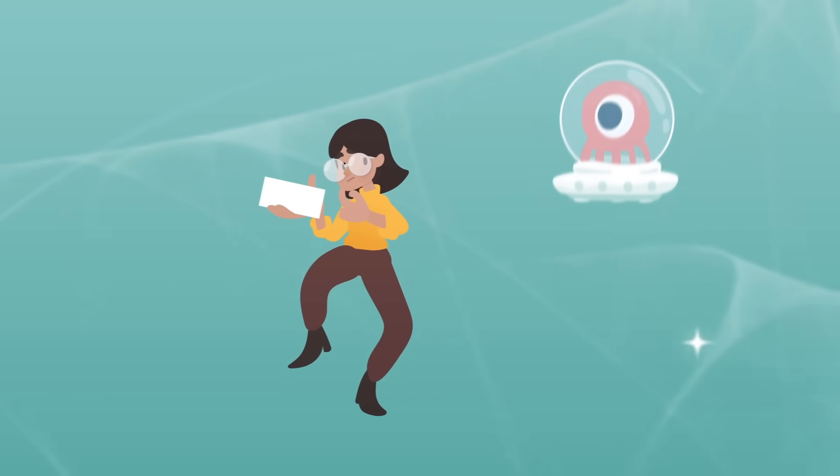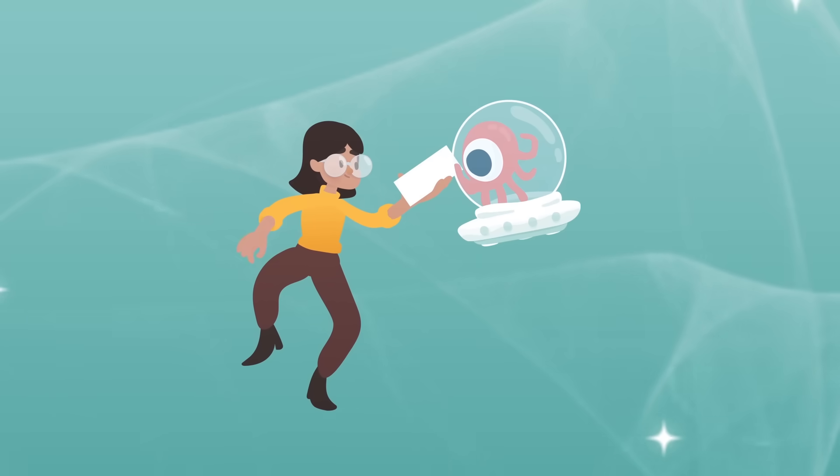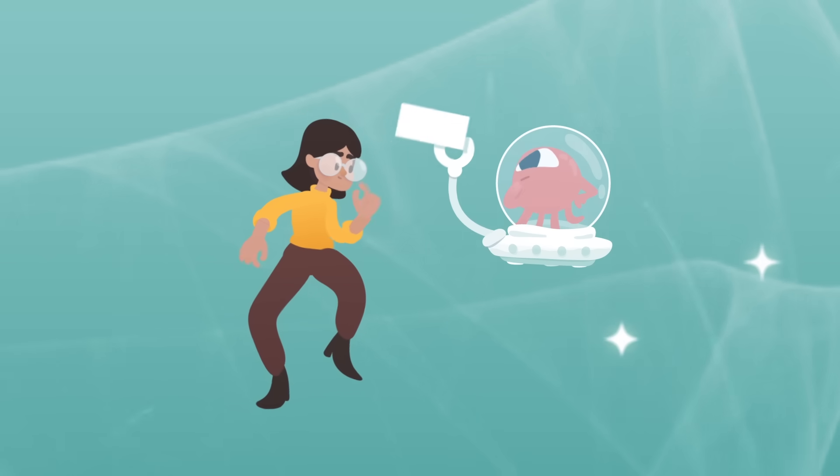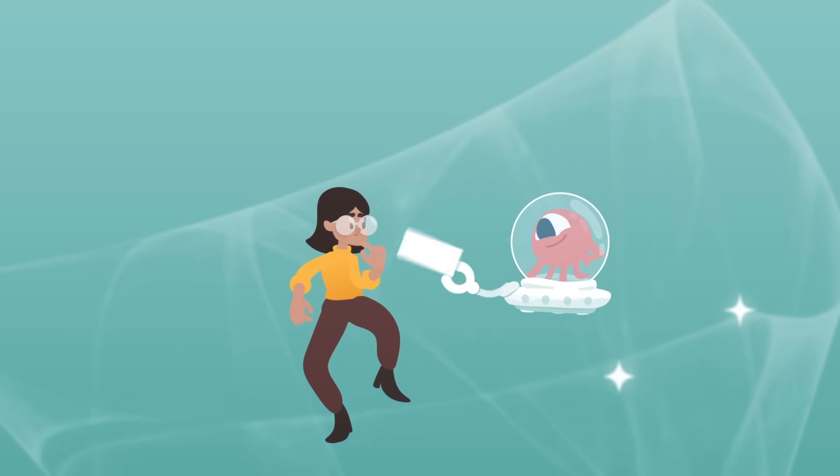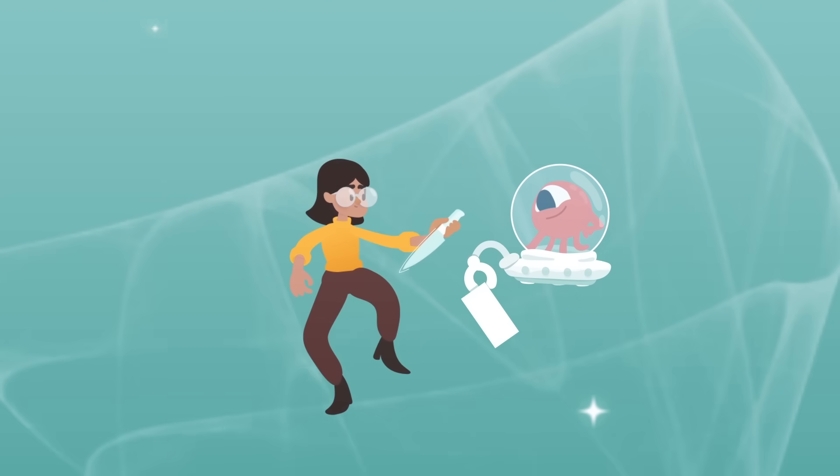If we ever meet aliens, axioms which seem absurd and incomprehensible to us might be everyday common sense to them. To investigate, we might start by handing them an infinitely sharp knife and a perfect ball and see what they do.